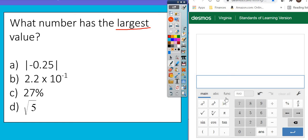Again, use Desmos. It will help you in every situation. We're going to take the absolute value of negative 0.25, and that is positive 0.25.